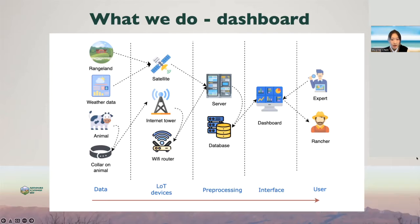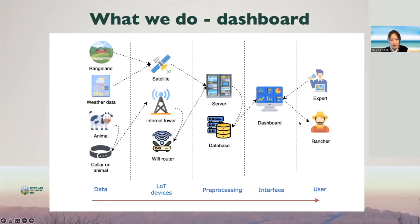The server also keeps other environmental information such as weather data and feed and water consumption of animals. All of this data is integrated into our database. After all data are stored, experts design algorithms to calculate statistics and analysis, and show the statistical results to dashboard users. In future work, we will also leverage machine learning techniques to generate more advanced reports, all presented in a user-friendly manner in our dashboard.